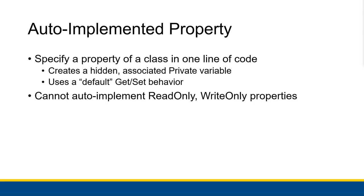Sometimes you have properties with a very default get and set behavior, like score one and score two, where all they are doing is just returning the value of the variable and setting the variable to the value you are giving it without any modification or checking whatsoever - just very default behavior. Instead of having to write all of that out and declare the variable yourself, Visual Basic actually allows you to use what's known as the auto-implemented property, which lets you specify a property of a class in one line of code. It creates a hidden associated private variable that you can still use within your class.